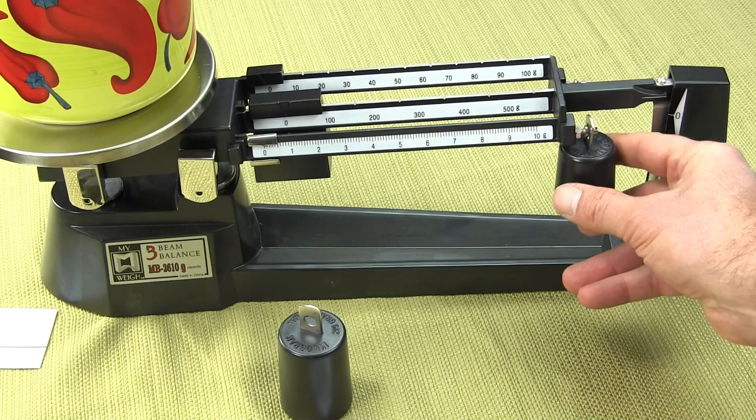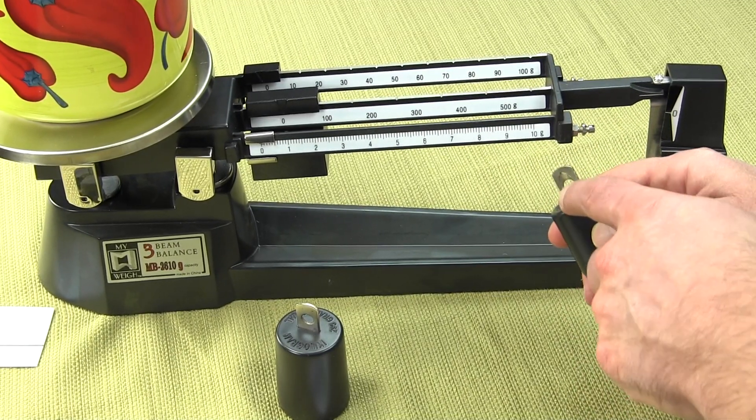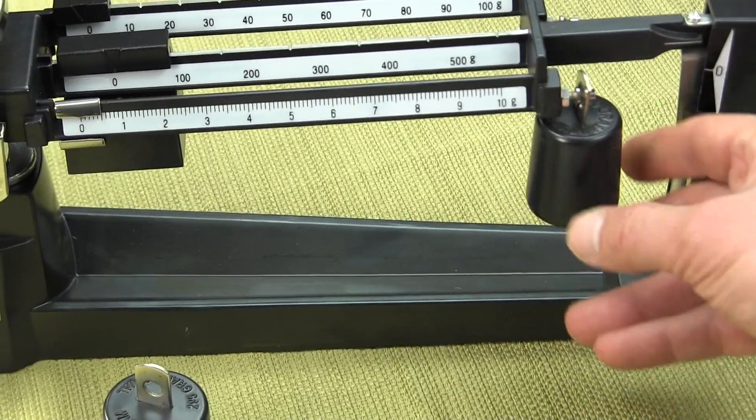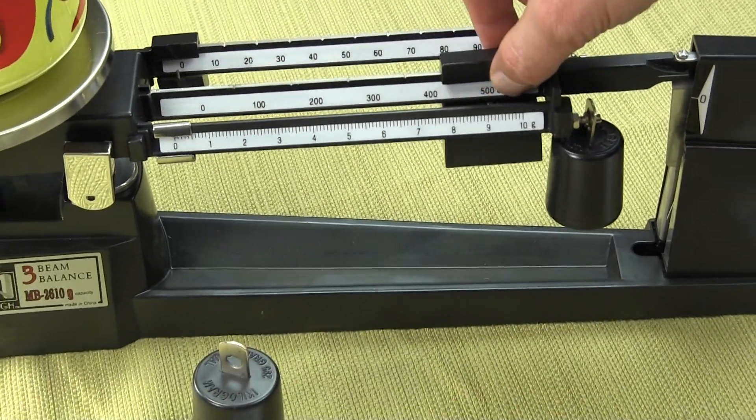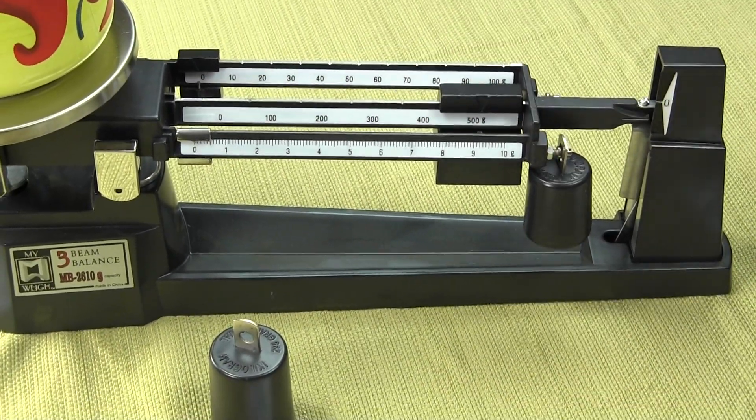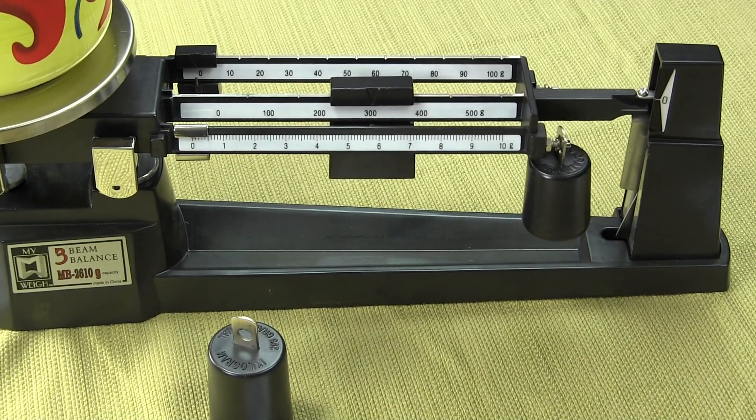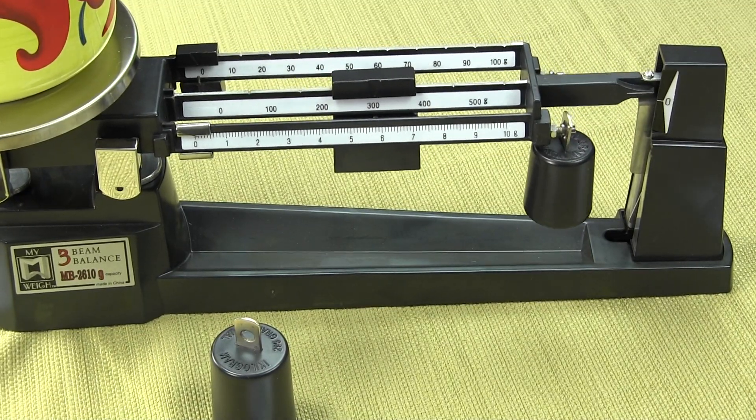We hang it right on there. You'll notice there's a groove on the attachment weight. That groove right there goes towards the beam. We're going to slide the 500-gram poise all the way until the beam goes down. Now we just start sliding it back. Now the beam's high here.